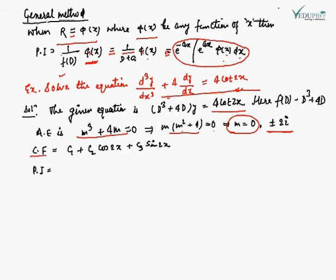The complementary function is equal to c1 times e to the power 0x, which is 1, so it remains c1. For the complex roots, alpha is 0, so e to the power 0x times (c2 cos 2x + c3 sin 2x). Since e to the power 0x is 1, the complementary function is CF = c1 + c2 cos 2x + c3 sin 2x.